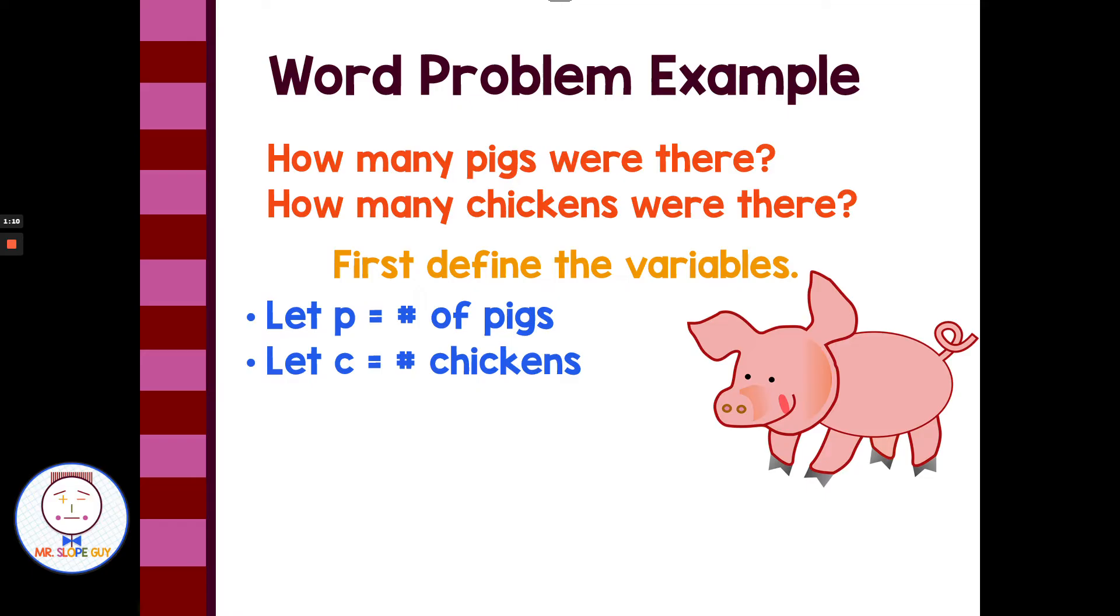So first I would start with the number of pigs plus the number of chickens was 30. The handsome math teacher counted all the heads of pigs and chickens and came up with 30. So that's an easy equation to write. We just have p plus c is 30.